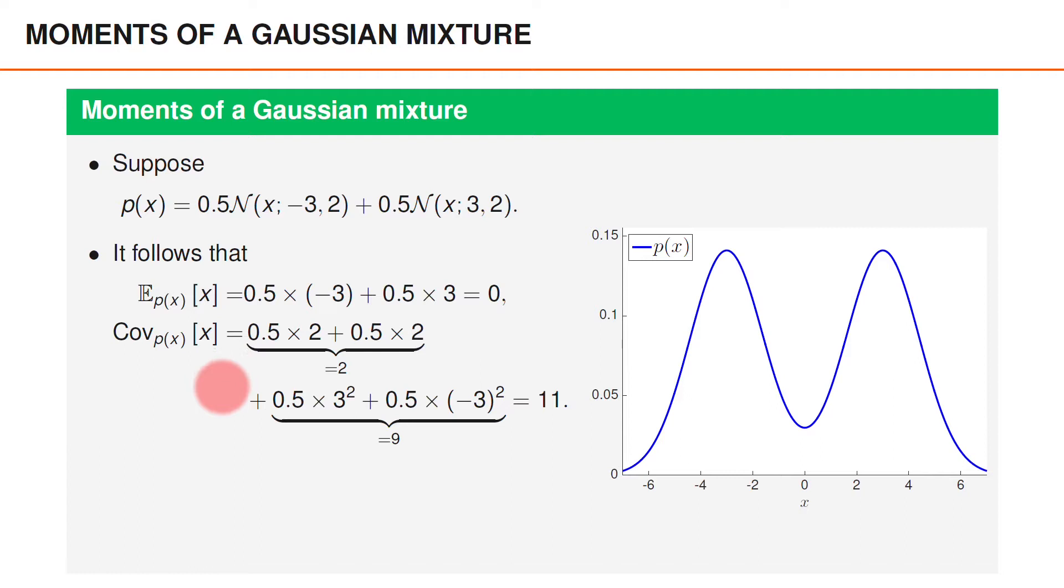The covariance of x separates into two parts where the first is the average variance of the two components. Since both have variance 2, the expected value should be 2. And if we plug in the values, this part is 0.5 times 2 plus 0.5 times 2 and as expected, the result is 2.